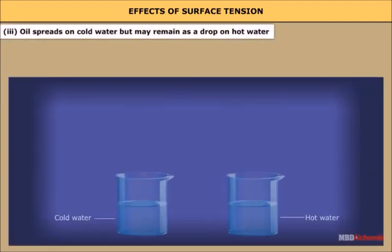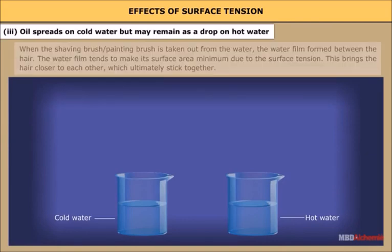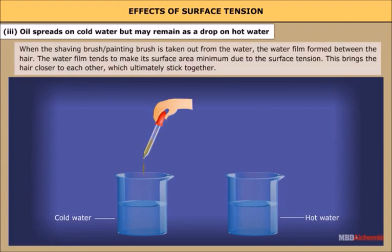Number three: oil spreads on cold water but may remain as a drop on hot water. The surface tension of oil is less than that of cold water, so it spreads on cold water. However, the surface tension of oil is more than that of hot water, which is why it remains as a droplet on hot water.